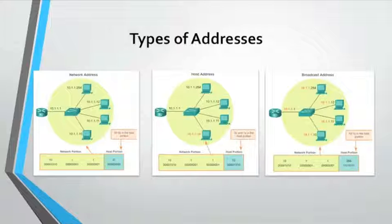Host address: every end device requires a unique address to communicate on the network. In IPv4, the values between the network address and the broadcast address can be assigned to end devices in a network. The IPv4 broadcast address is a special address for each network that allows communication to all hosts in that network. To send data to all hosts at once, a host can send a single packet addressed to the broadcast address, and each host in the network that receives this packet will process its content.